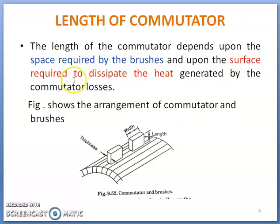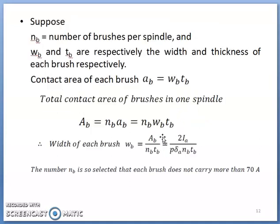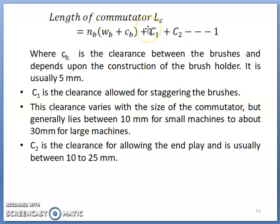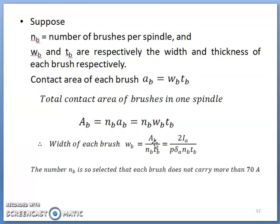In summary, the length of the commutator depends on two factors: the space required by the brushes, and the surface required to dissipate heat from commutator losses. By considering current density and contact area, the size and width of each brush can be decided, which in turn determines the length of the commutator. This completes the design of the commutator in terms of its diameter, length, and brush dimensions.